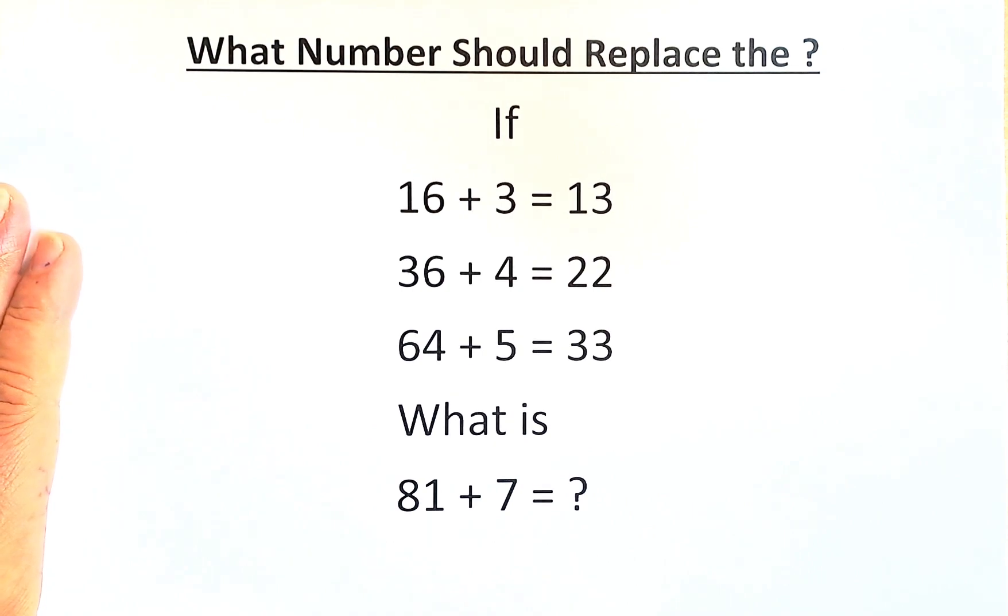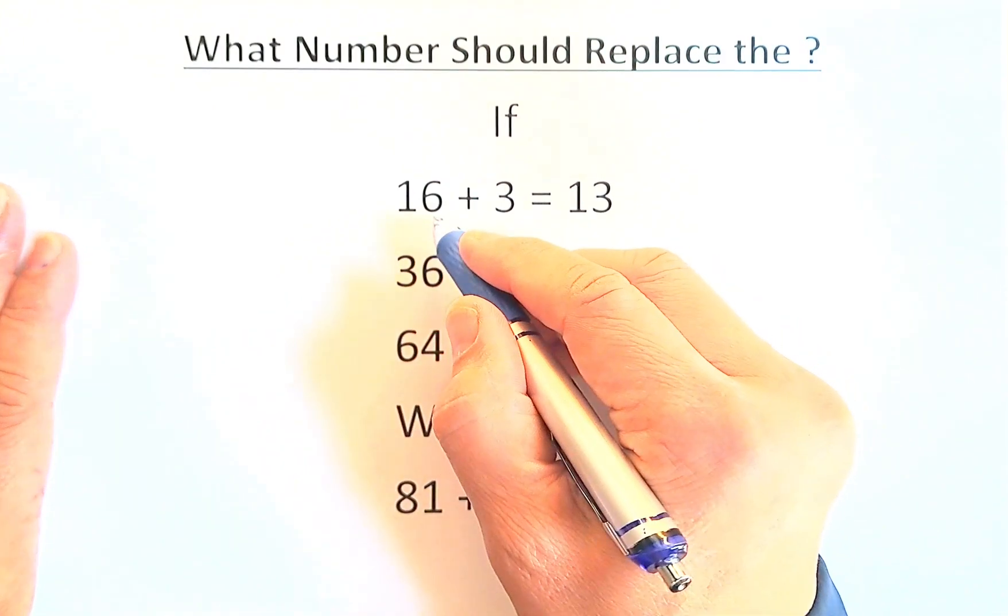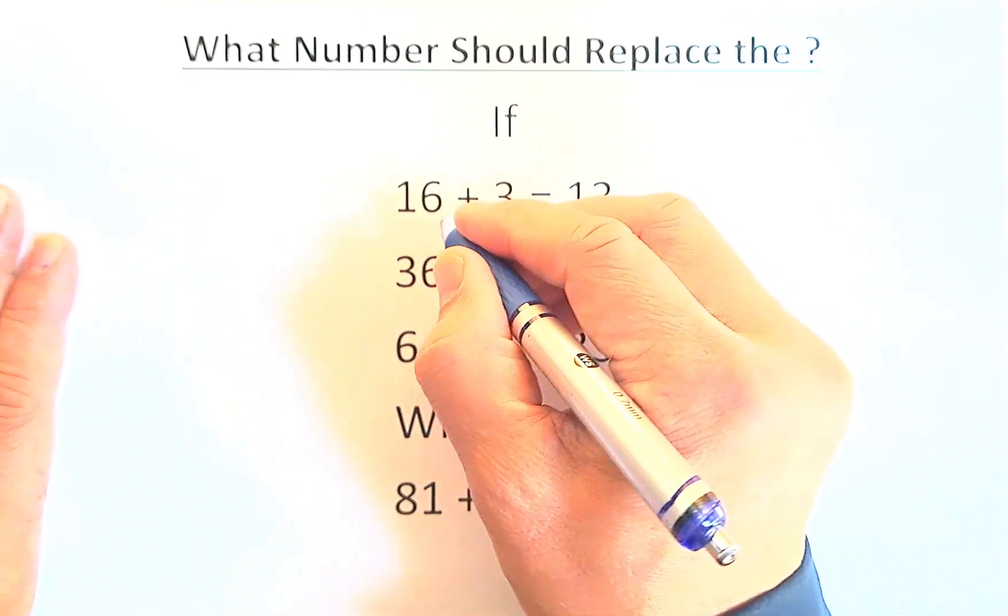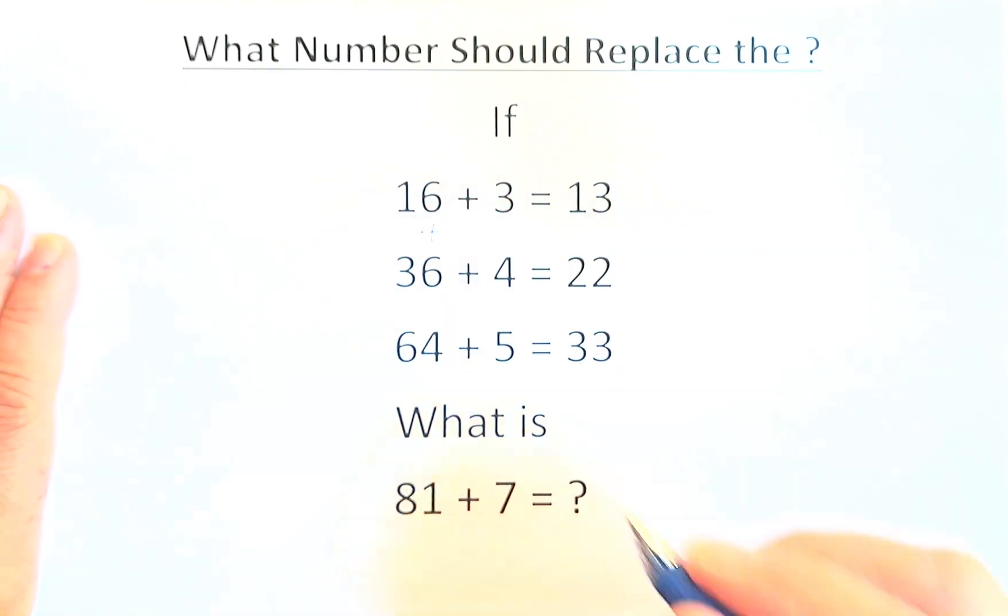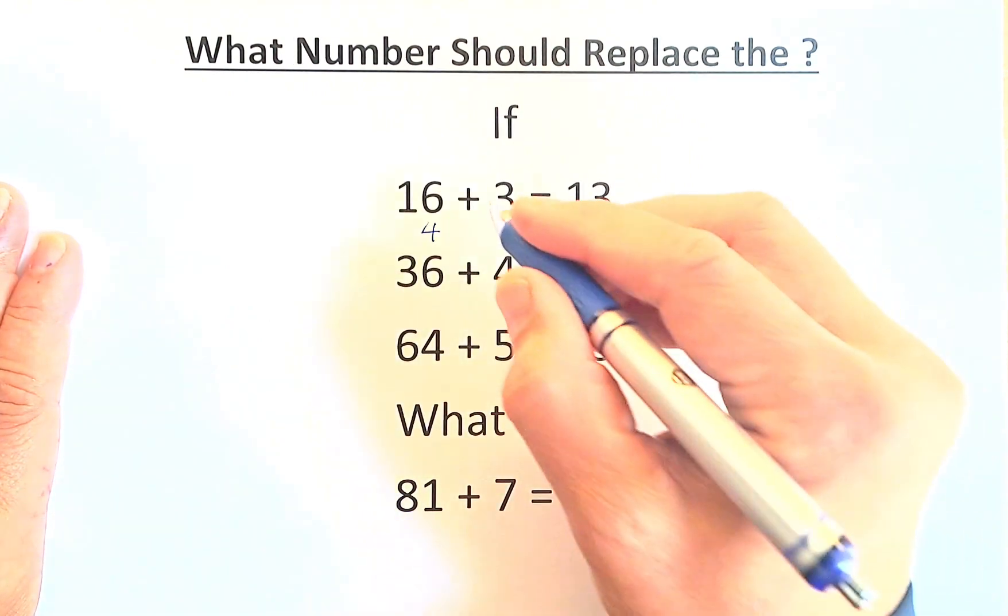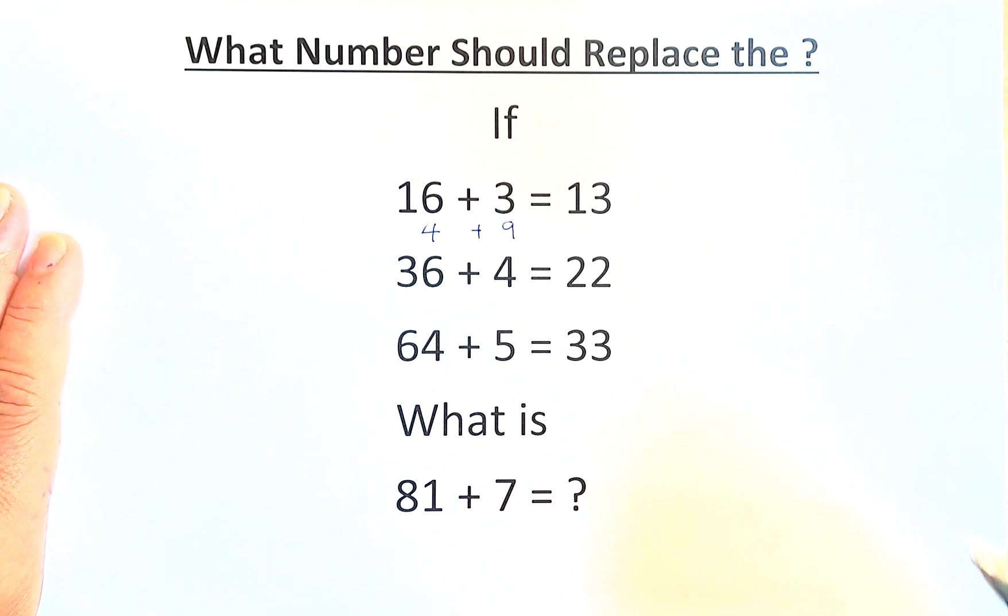16 plus 3 equals 13. What you do, you're going to square root 16. All the numbers on the left are square numbers. So 16, when you square root, becomes 4. On the right-hand side, you're going to square the number. 3 squared is 9. So, 4 plus 9 gives us 13.